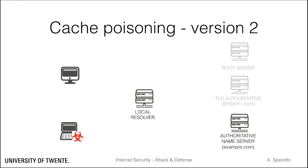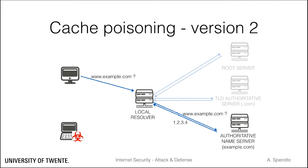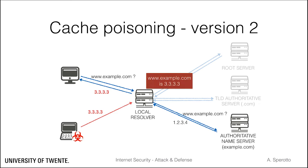Let's now see another way of implementing a cache poisoning attack. Assume that a legitimate host issues a query for a domain. Eventually, the local resolver will receive a reply from the authoritative name server, and this answer will be cached by the local resolver for possible later use. If an attacker succeeds in forging a fake DNS reply, and the local resolver fully accepts the answer, it will cache the malicious mapping — this is another instance of cache poisoning.